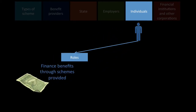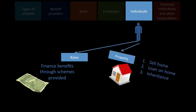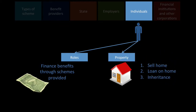Individuals' main role is to finance benefits through the schemes provided by the state, the employer, or financial institutions. Individuals can also use their property for future provision — they can sell their home, take a loan against their home, and quite a lot of people also inherit homes.